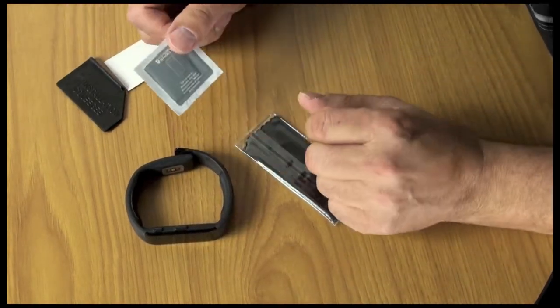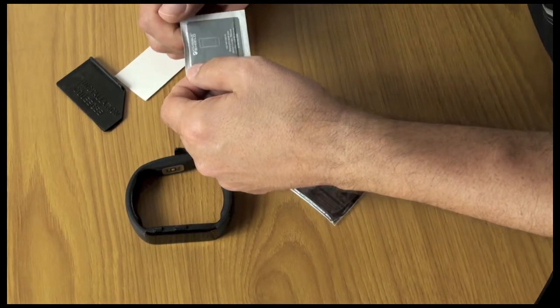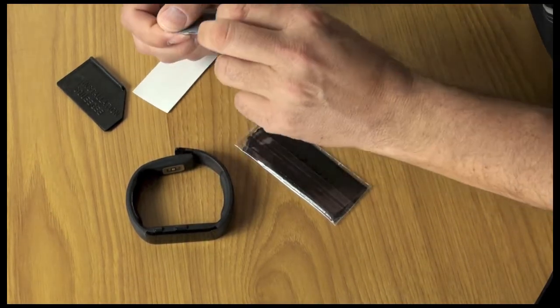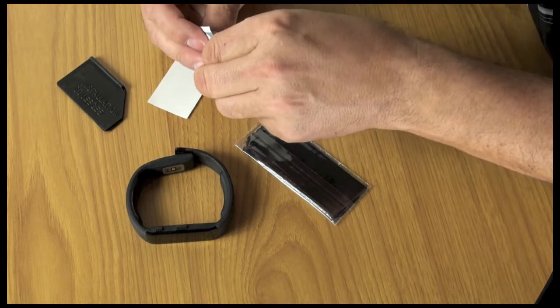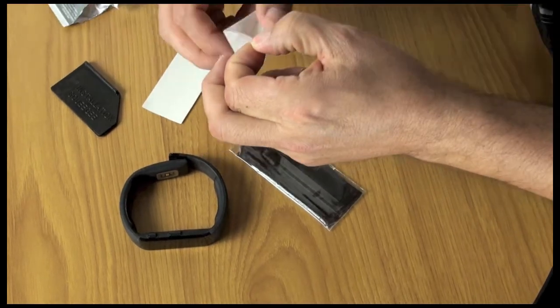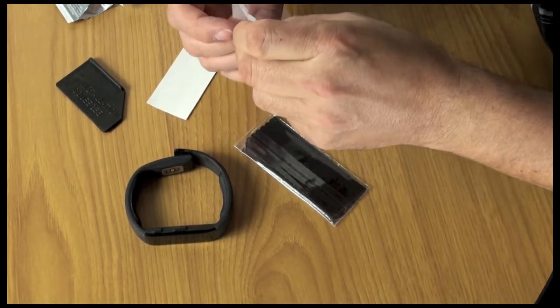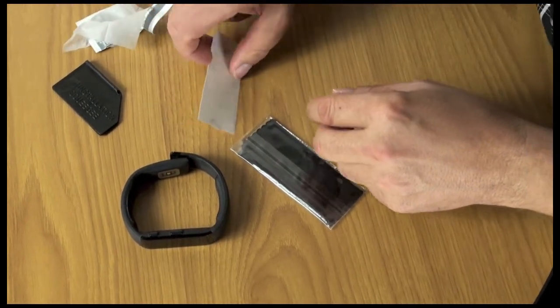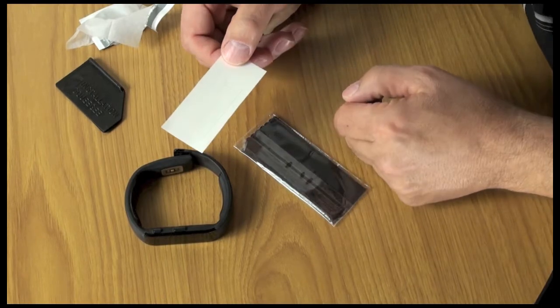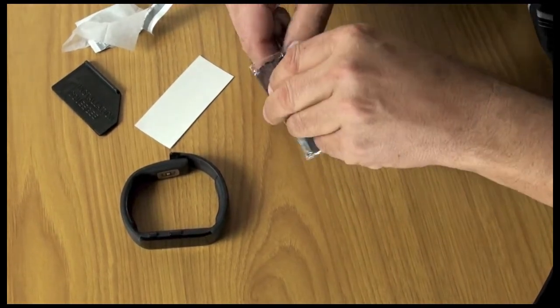So first step is they have this goop, this cleaning stuff, and we'll need to use that. So we open up the little envelope and we should have a little moisture thing in here. And they say it's very important, don't actually put that on the device. You want to put it on this. So let's do this in order.